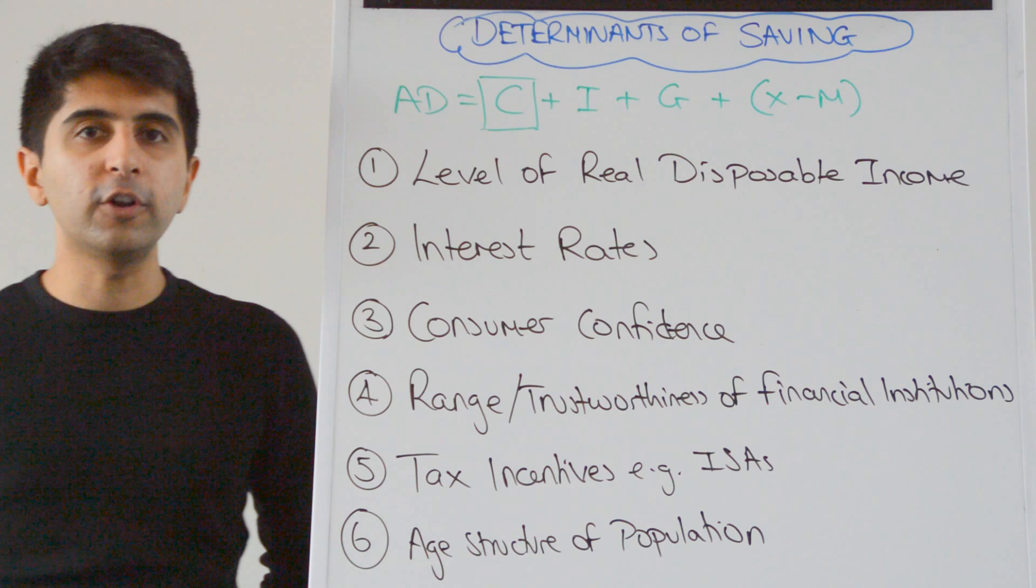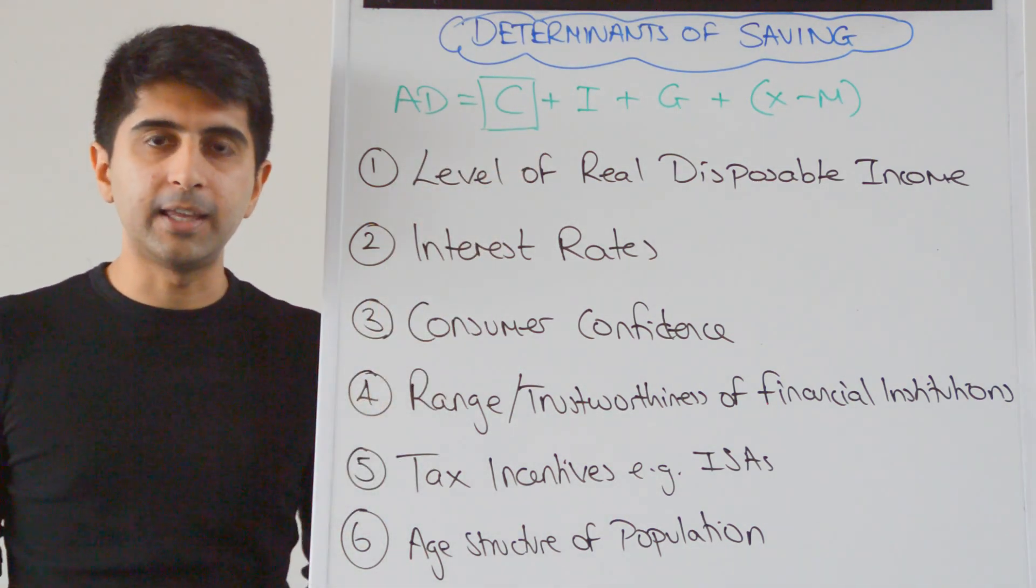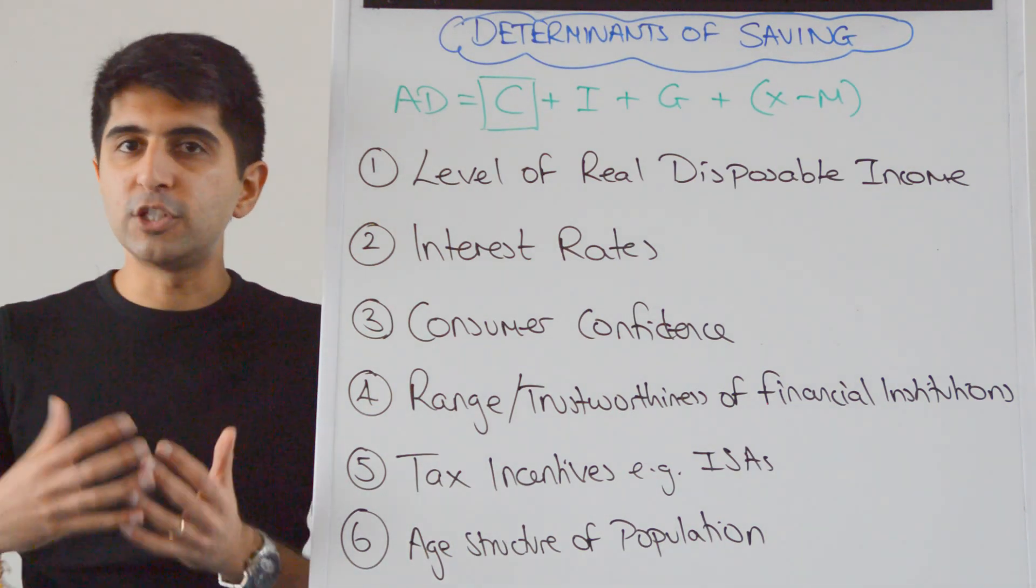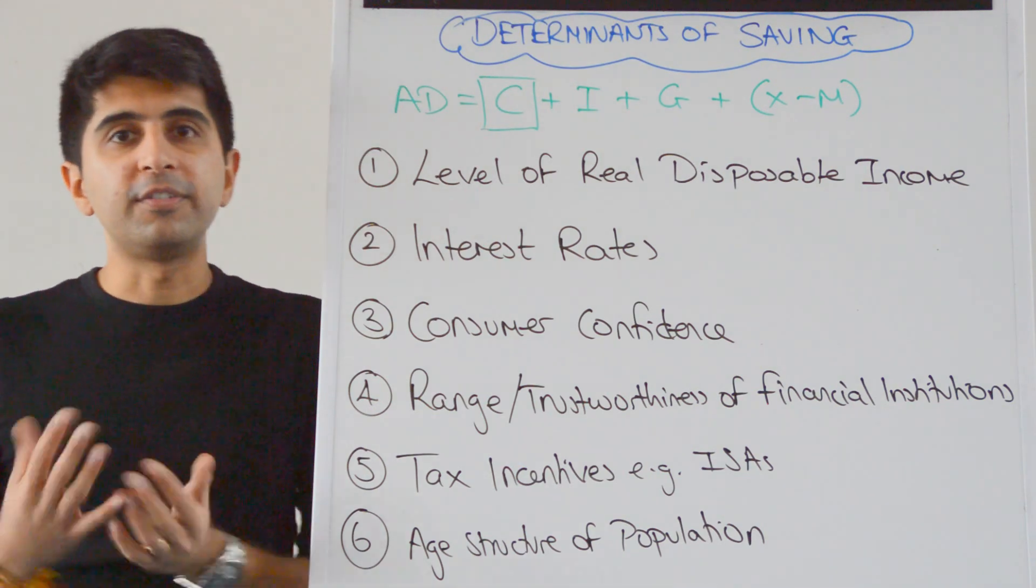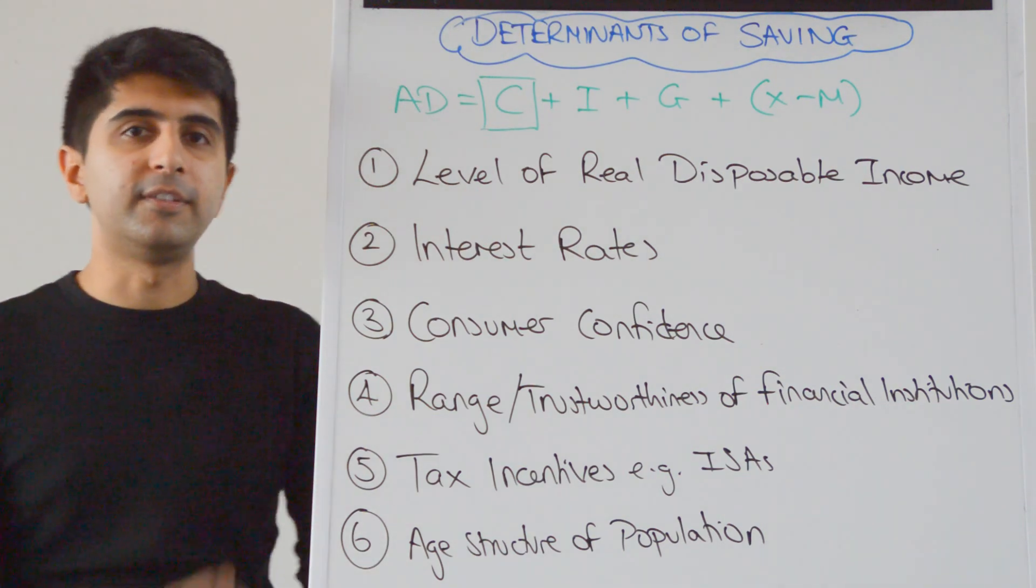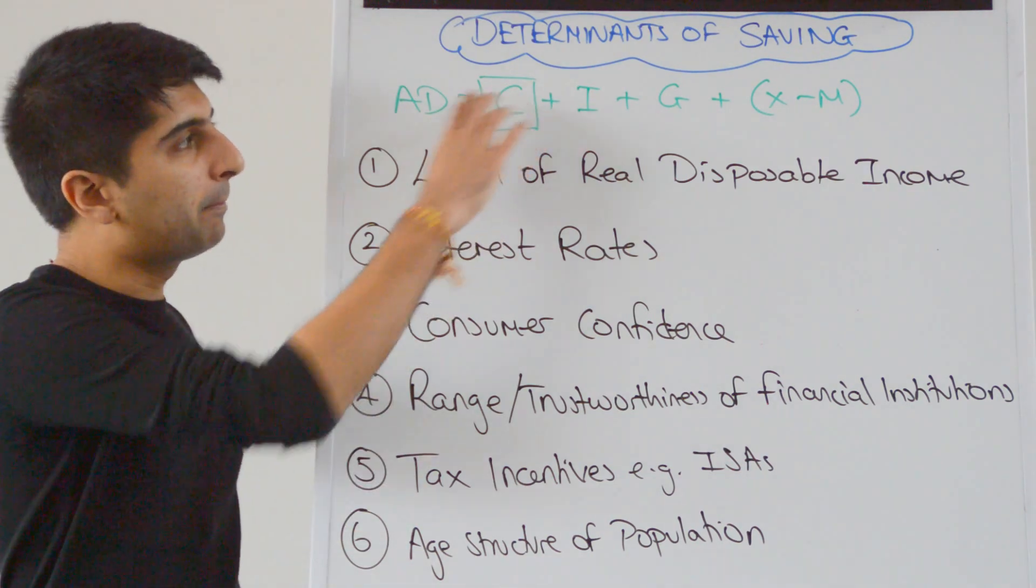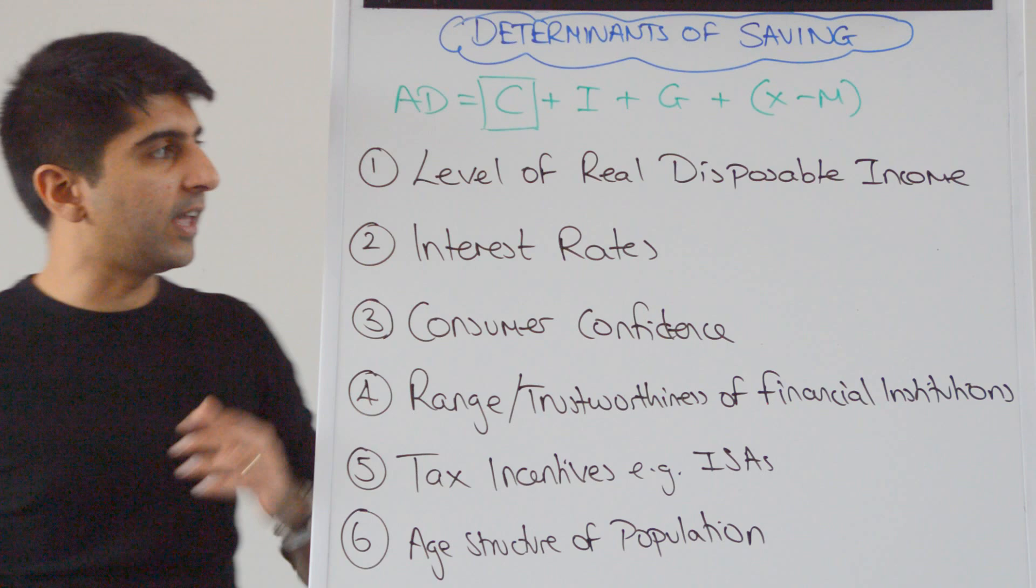If savings increase in the economy it means by default there is going to be less consumption taking place in the economy and AD will shift to the left. Remember there are only two things that an individual can do with income that they earn. They can either spend it or save it. So if savings increase it means consumption is decreasing. So savings is a determinant of AD by affecting consumption, the level of consumption in the economy. So what kind of factors can affect saving?